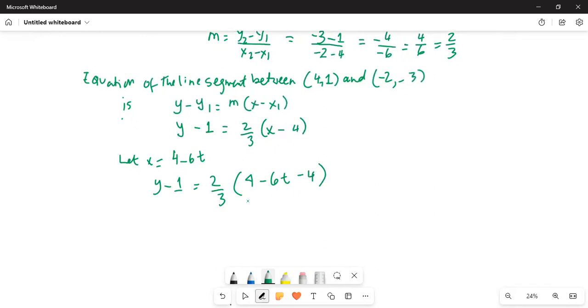So y minus 1 is equal to 2 thirds. 4 minus 4 is 0, and then it is minus 6t.